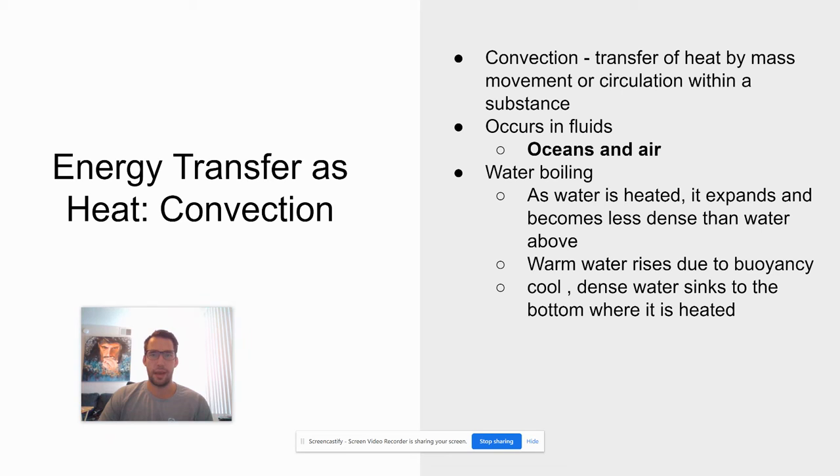The same thing is happening in the ocean. So at the equator, the oceans are warming up. They're going to be migrating down to the poles where it's cooler. And then as it cools off, the cold water from the poles is going to come up to the equator.